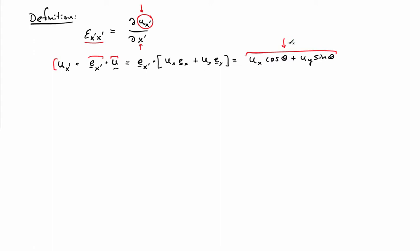Now I need to convert the denominator — the derivative with respect to x prime — into something given in terms of derivatives with respect to x and y. That will allow me to get strains into the expression. Using the chain rule, the derivative with respect to x prime can be written as: the derivative with respect to x times the derivative of x with respect to x prime, plus the derivative with respect to y times the derivative of y with respect to x prime.